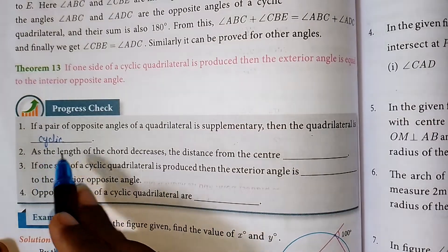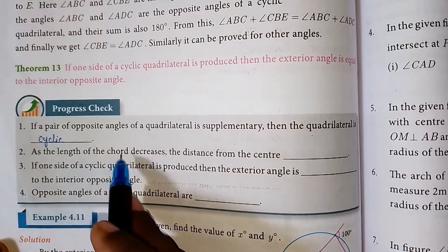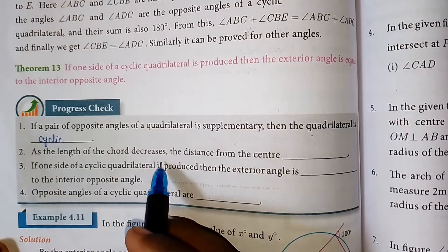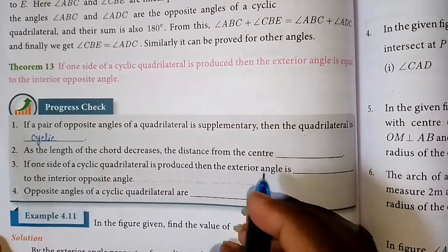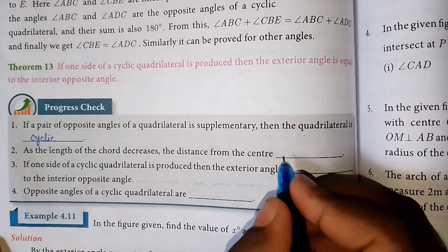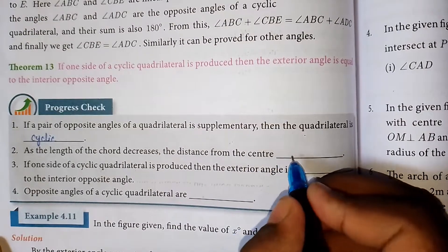Second one: as the length of the chord decreases, the distance from the center increases.